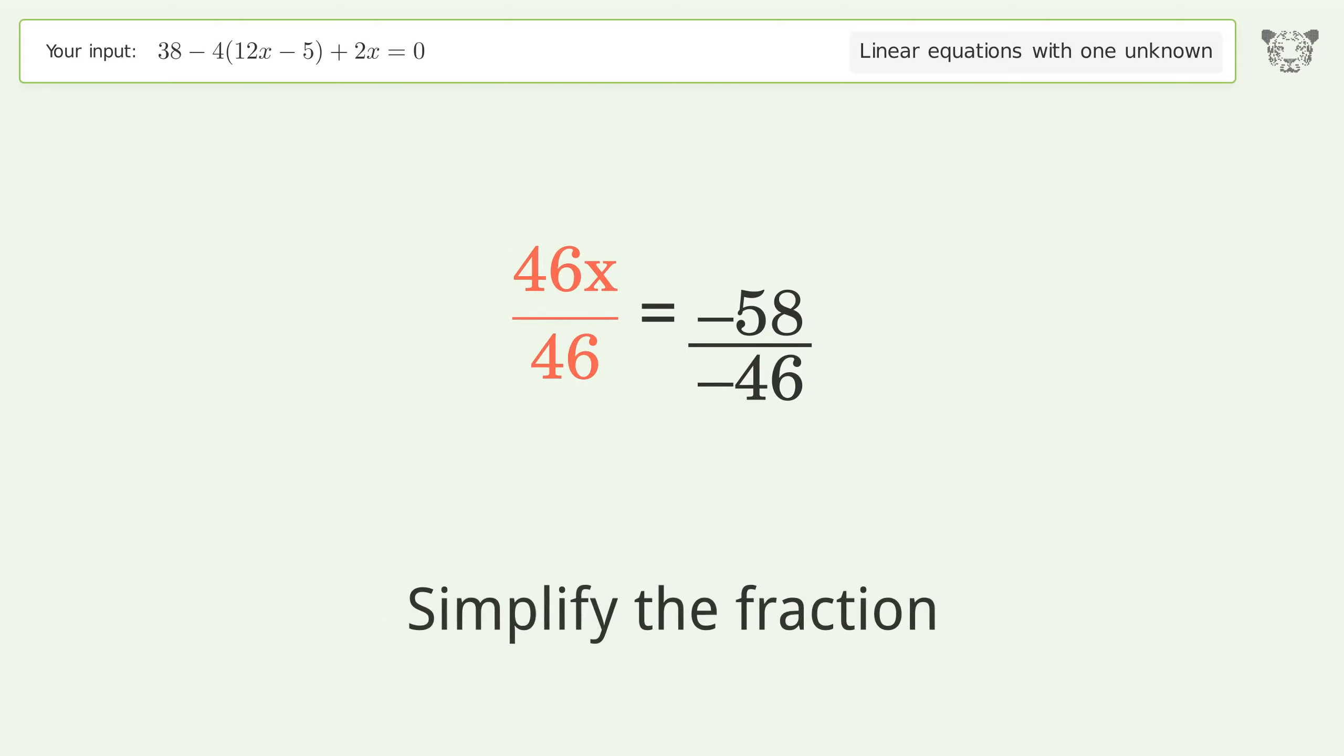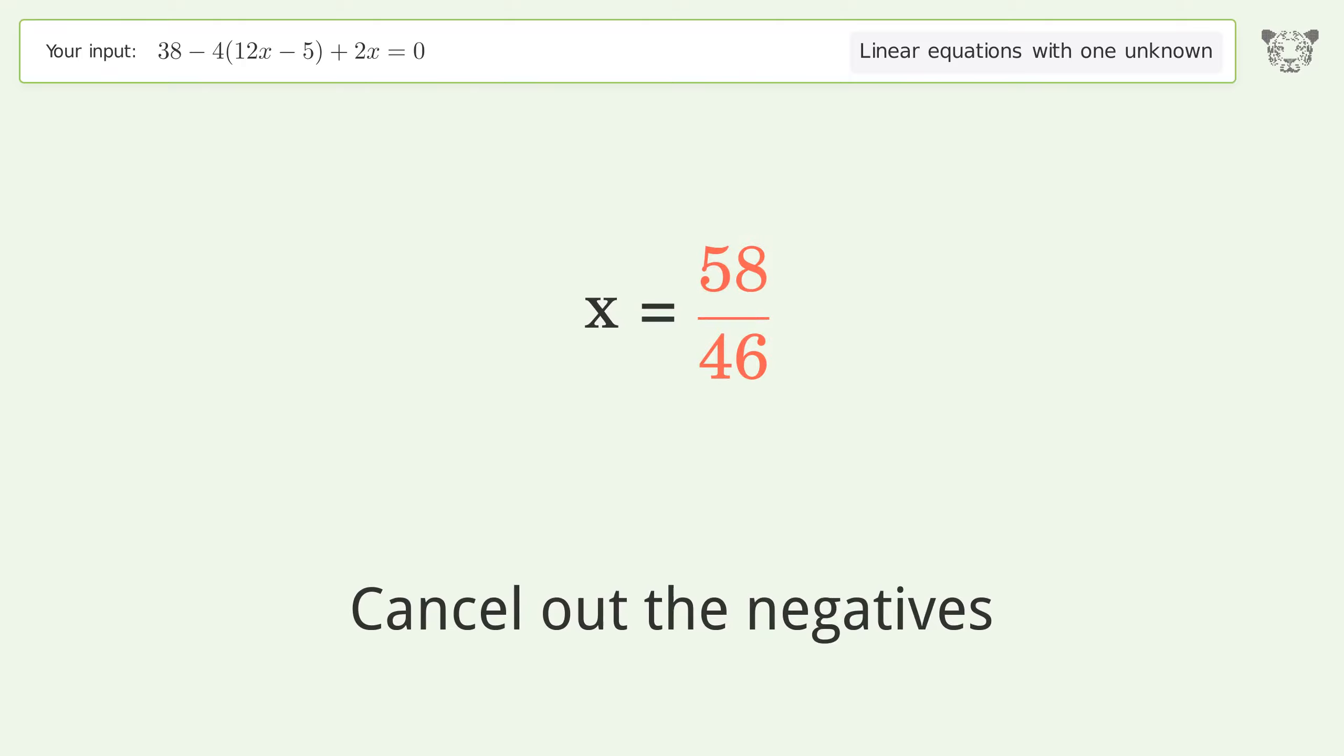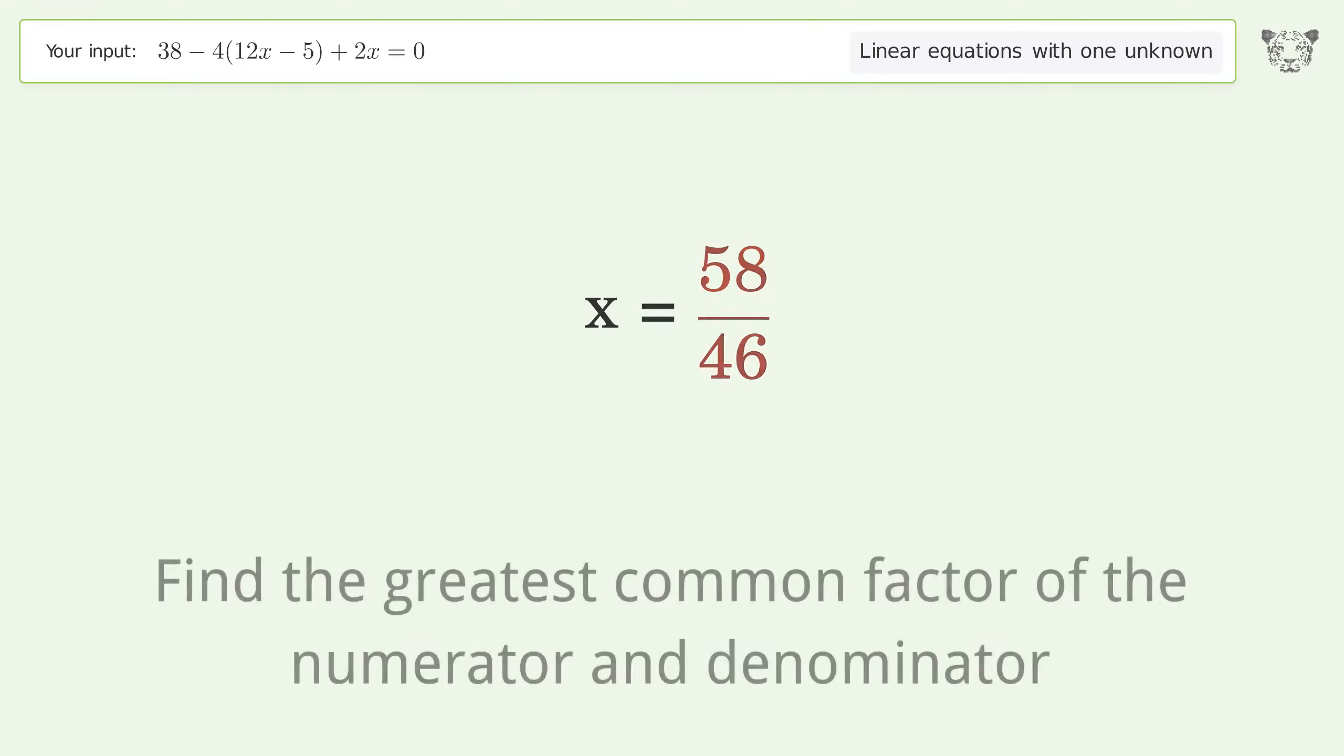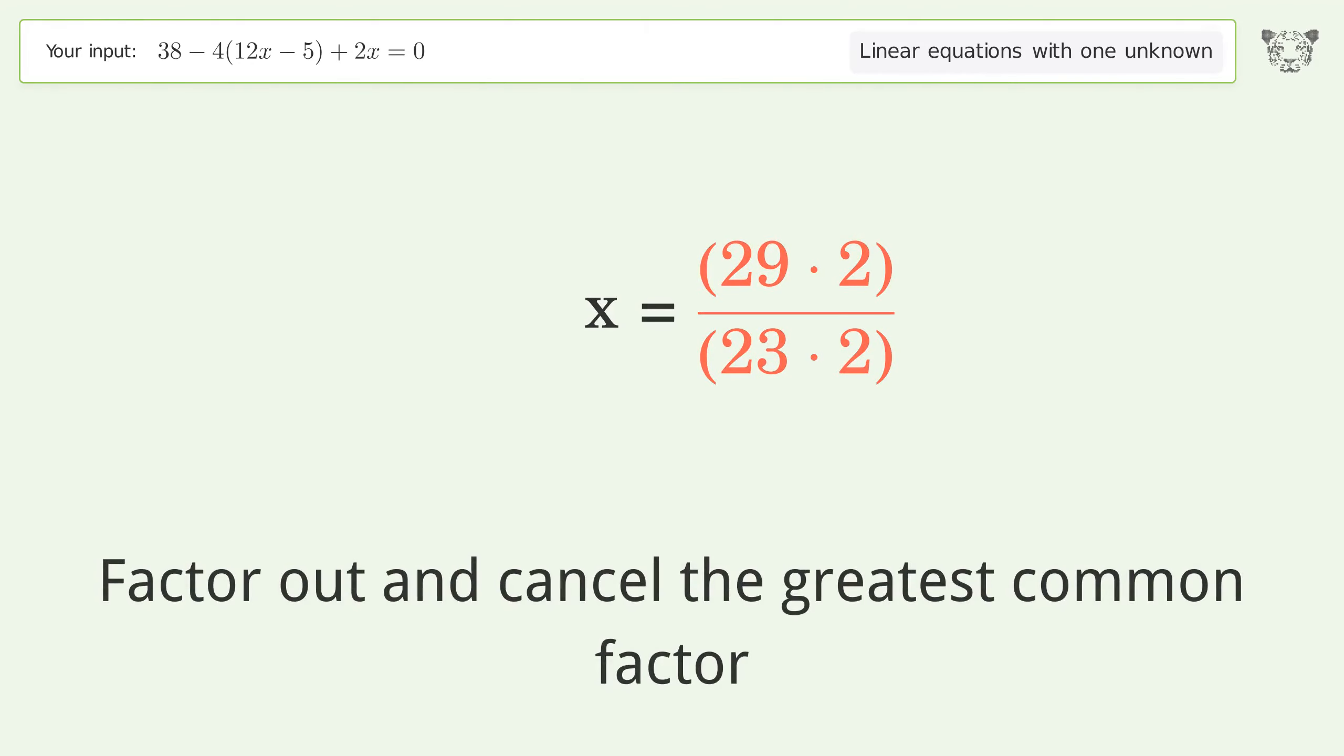Simplify the fraction. Cancel out the negatives. Find the greatest common factor of the numerator and denominator. Factor out and cancel the greatest common factor.